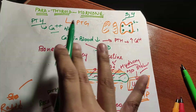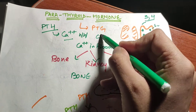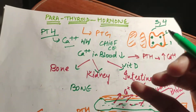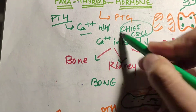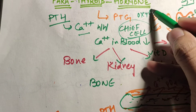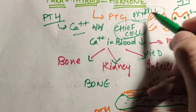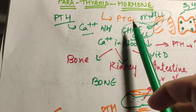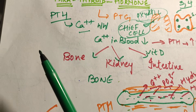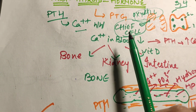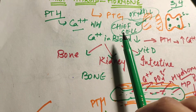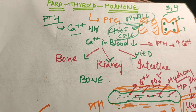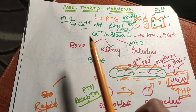Parathyroid hormone is secreted by the chief cells of the parathyroid gland. There are two cell types in the parathyroid gland: chief cells and oxyphilic cells. It is the chief cells that secrete PTH. On the chief cells there are calcium-sensitive receptors that sense the blood calcium level — when blood calcium decreases, the chief cells produce parathyroid hormone.